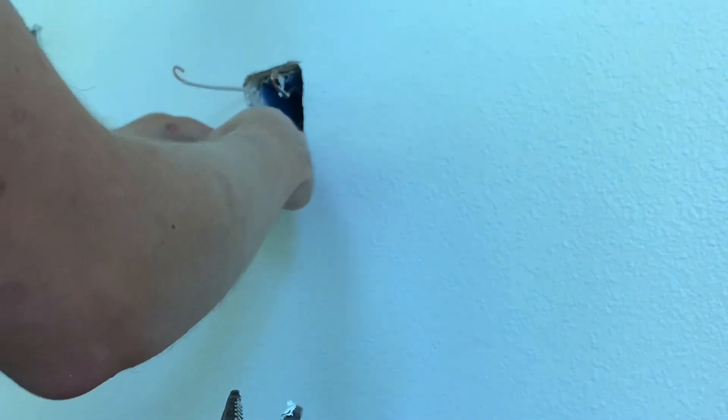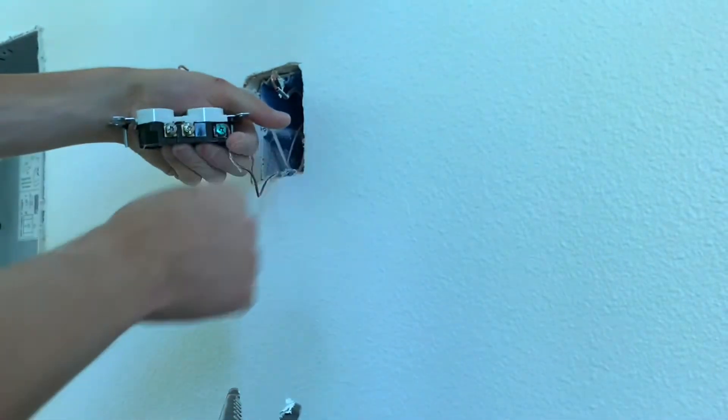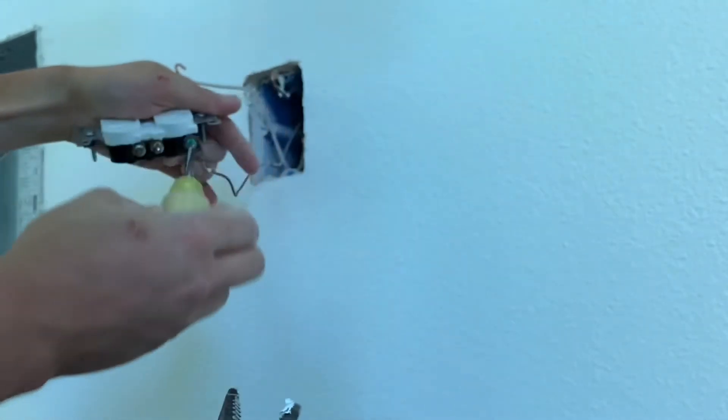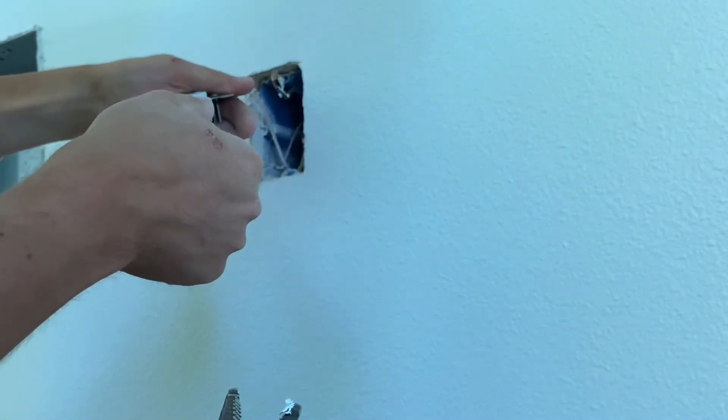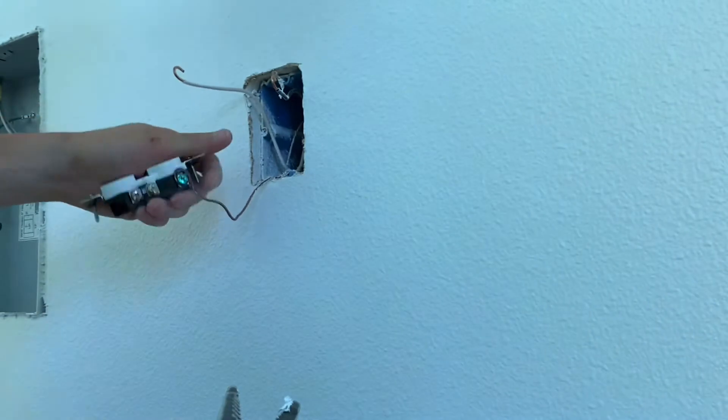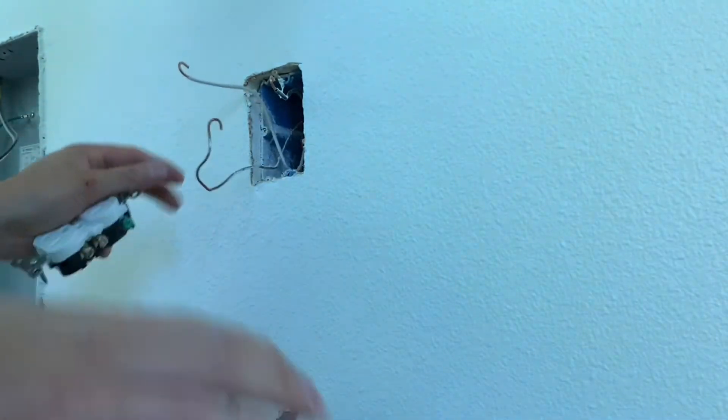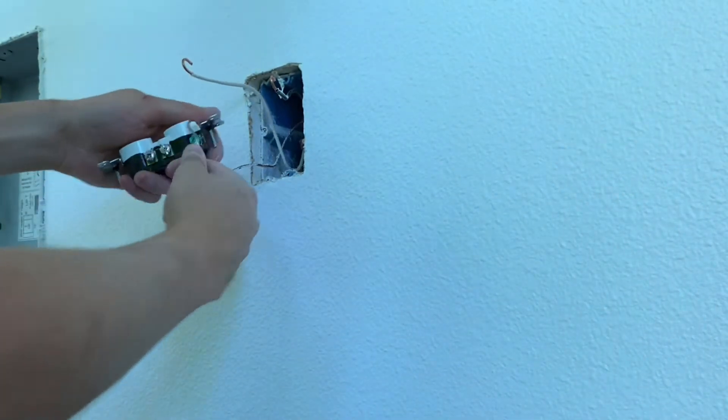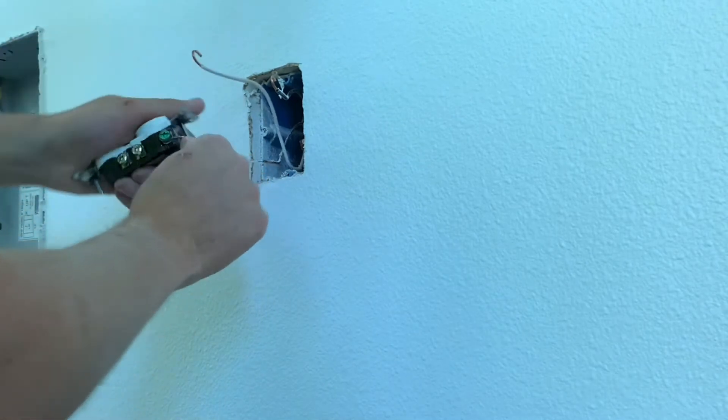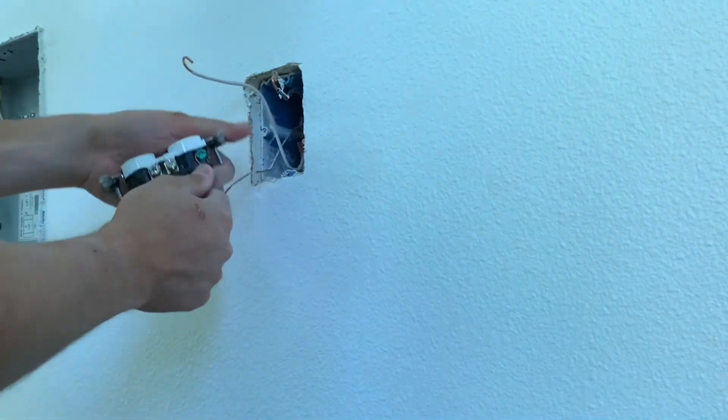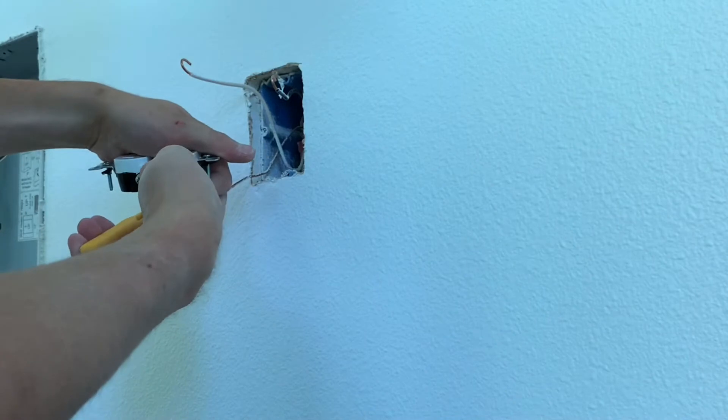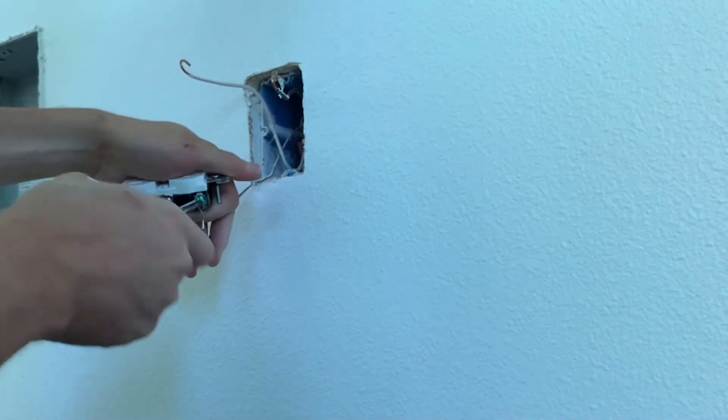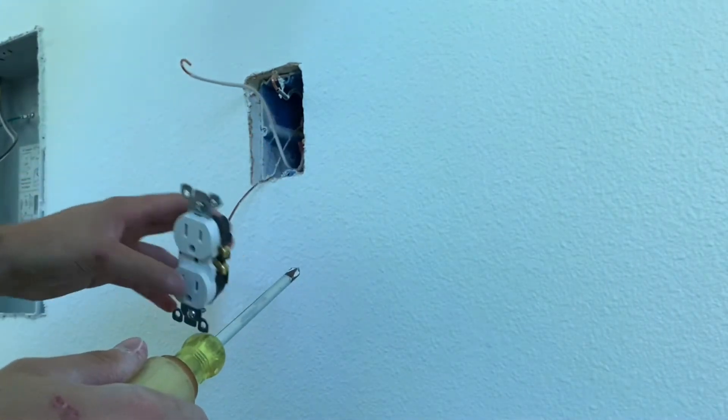When you tighten this down it will back out the screw, as you can kind of see here. So you want to make sure you do it the right way, the correct way. Make sure that the wire goes the same direction as the screw. You can tighten this down a little bit if you want to wrap around the screw, and then just tighten that down. I don't have my drill with me so I'm just going to loosely do this because I'm going to take it back out.